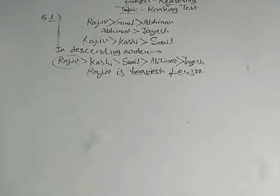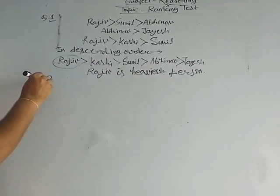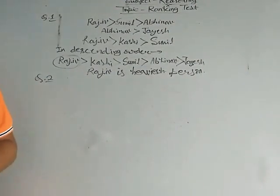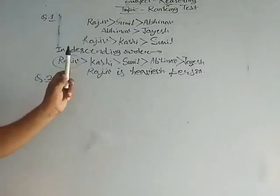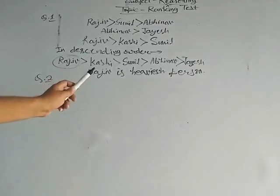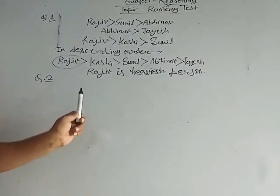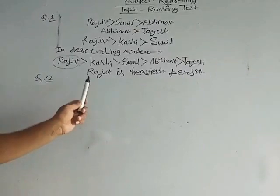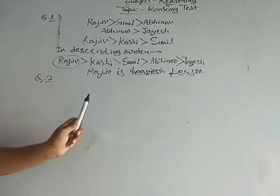Now we start question number two. Vinay is taller than Hansika. Hansika is taller than Abhinav. Alok is taller than Ashok. And Ashok is taller than Vinay. Who is the shortest in the group?